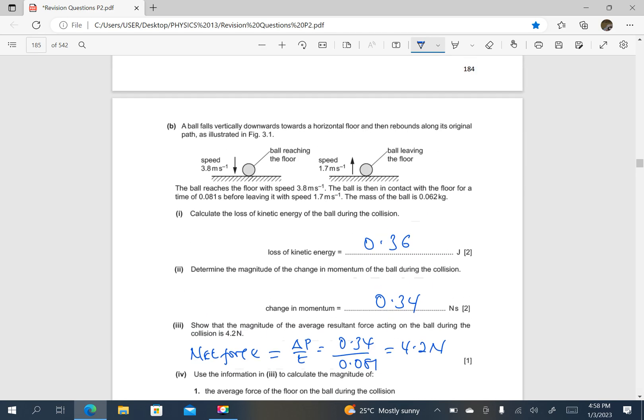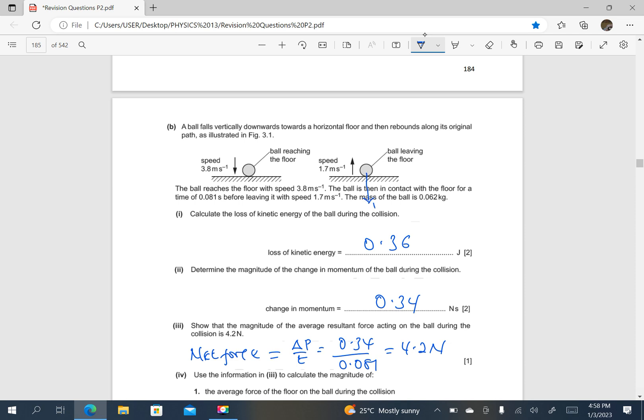Now you look at this ball here. When it is in contact with the surface, its weight is acting vertically downwards, that is mg. Its weight is acting vertically downwards. But on impact, the ball experiences a resultant force.